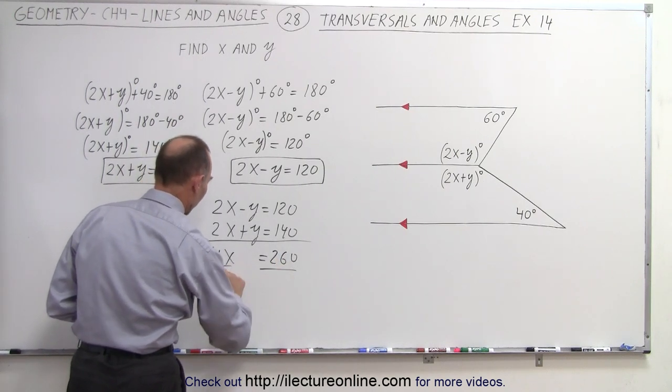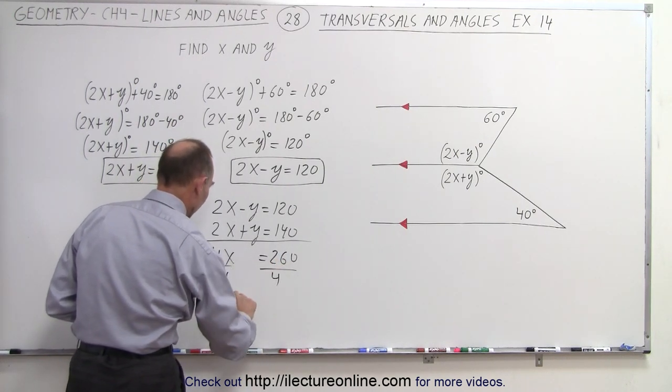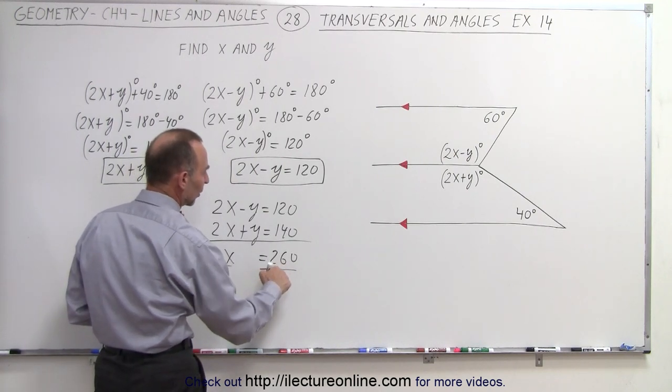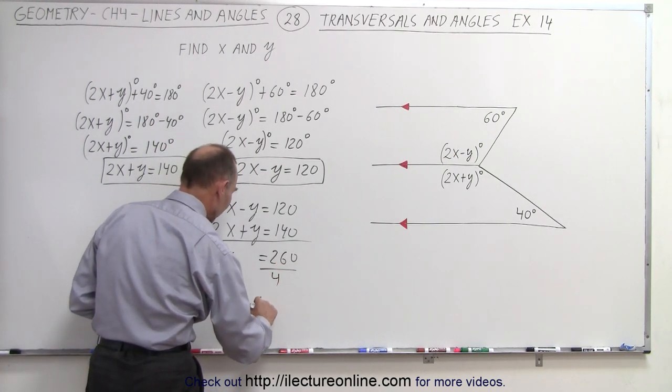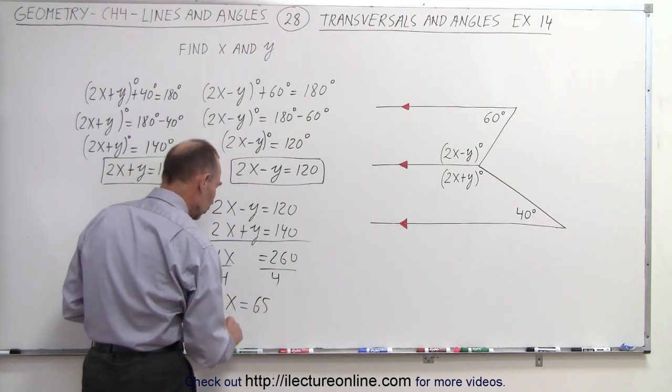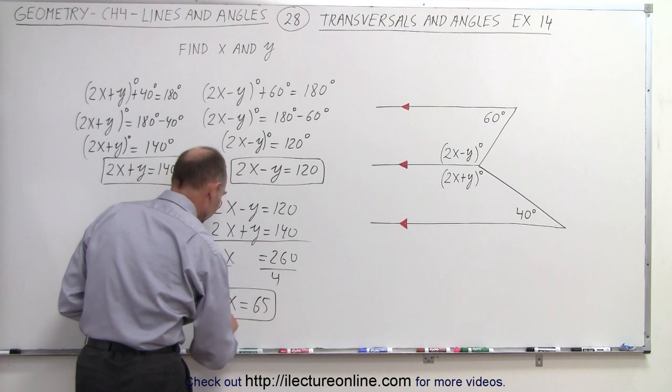Divide both sides by 4, and we get x is equal to, 4 goes into 24, that would be 6 times, that would be 65. 65 times 2 is 130, times 4 is 260. So x equals 65.